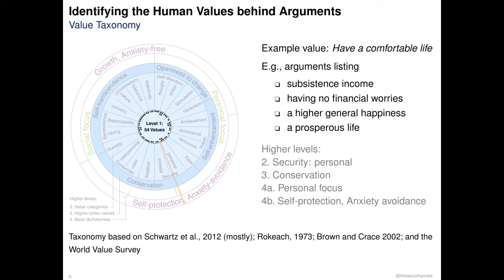At its core, we have 54 values — for example, having a comfortable life, highlighted in orange. To specify the values, we describe for each one which aspects a corresponding argument could refer to, like being about a subsistence income or relieving people of financial worries. We used and refined these examples during our data annotation process. With respect to our social science sources, the values on this first level correspond to the question items in the surveys.